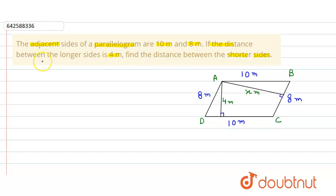So here we first consider, let the distance between the shorter sides equal to x meter. So here we have to find out the value of this x.